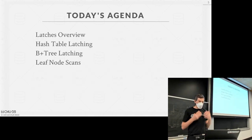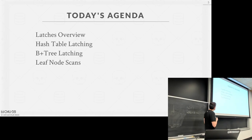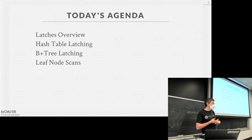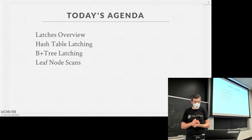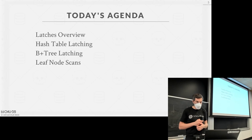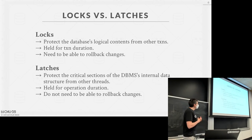We'll talk about how to implement latches in our database system, starting with a simple example of hash table latching with linear probe hashing, then spend most of our time on B+ trees and thread-safe leaf node scans. Hash tables are easy; B+ trees are hard — so we'll build up to it.